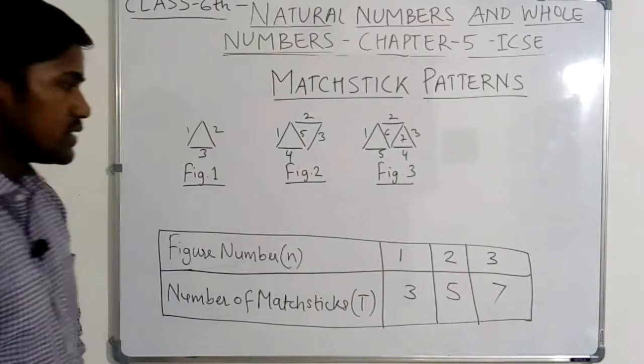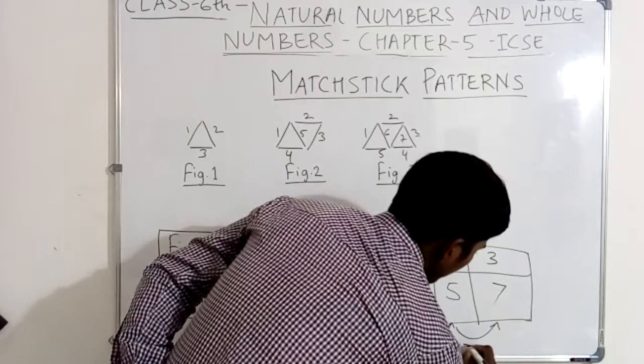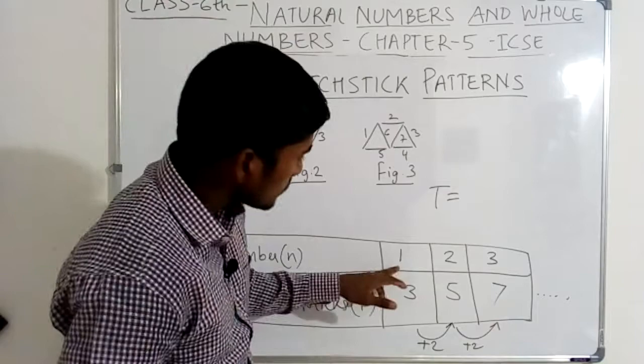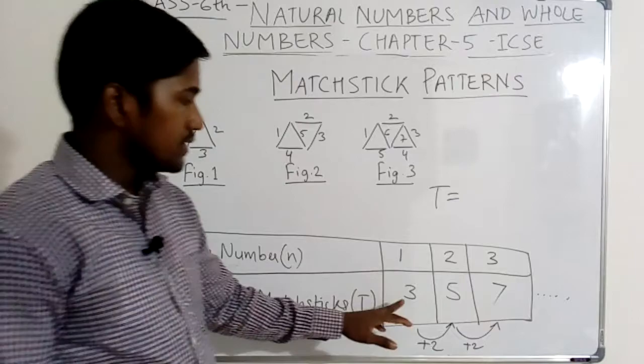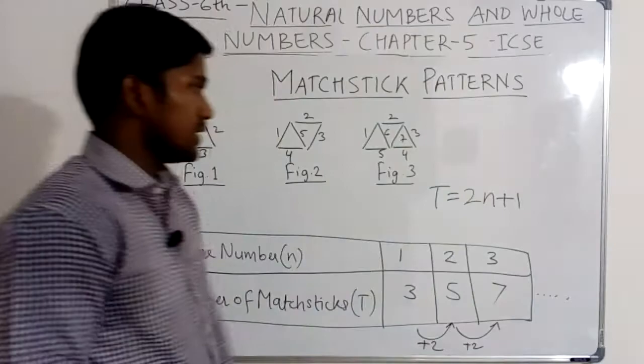See here: in figure number one, three mastic used. Three plus two equals five. Five plus two equals seven. So it increases by plus two each time. The formula is T equals two into n plus one, where n is the figure number. Two into one plus one equals three. Two into two plus one equals five. Two into three plus one equals seven. So T equals two n plus one.